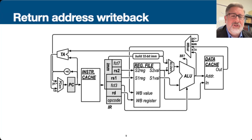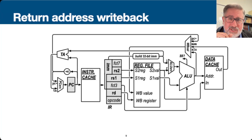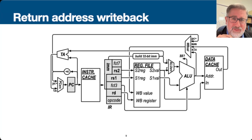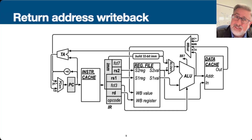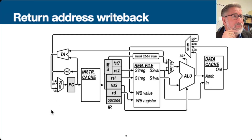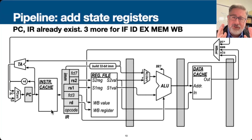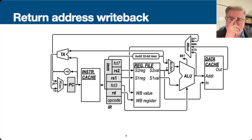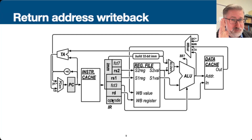Already, each chunk of this data path is somewhat isolated. The instruction cache happens more or less on its own. The instruction register specifies information to the register file, which is more or less on its own. The ALU does its math and produces its result to these different places — all of this happens in one cycle. Now our job is to break it up into pieces that can happen independently, and think about all the data we have to collect and follow to allow that. That's our independent unit for pipelining.